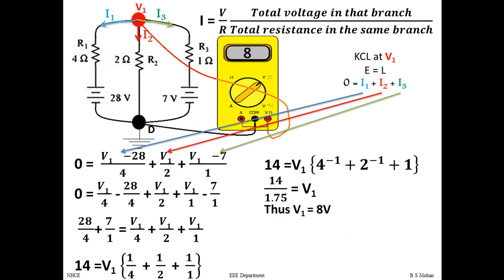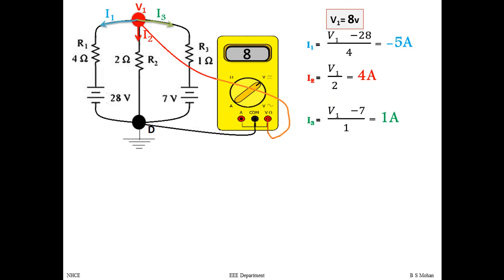Solving the KCL equation, we get V1 = 8V. So a multimeter with its positive probe at the top and negative at the bottom reads +8V. Substituting V1 = 8V back into the branch equations gives I1 = −5A, I2 = 4A, and I3 = 1A. The negative sign for I1 means the current actually flows in the reverse direction from what we assumed; the positive values for I2 and I3 confirm those currents flow as assumed.